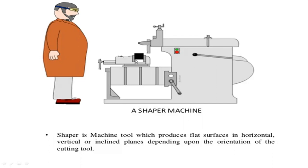Using a bench vise, you fix the table and fix the workpiece on the table to perform the surface finishing operation. The shaper machine is a tool which produces flat surfaces in horizontal, vertical, or inclined planes depending upon the orientation of the cutting tool.